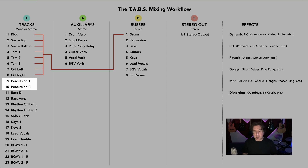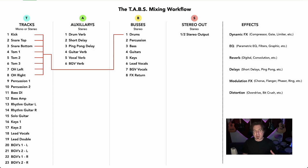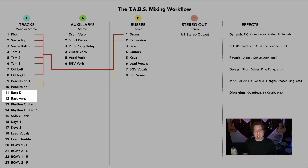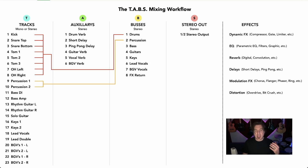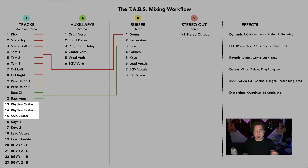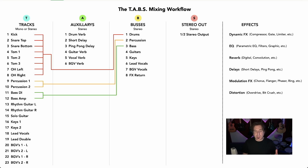Then we look at percussion — perhaps a shaker and a tambourine. I'll get a different blend on them since they're mostly high end, compress and EQ them differently, and assign those to a percussion bus. If I'm recording a bass, I might use a DI and a bass amp and get a good blend between those two, then assign them to a bass bus. Same with rhythm guitar — let's say I have a left and right rhythm guitar and a solo guitar on top; I'll assign those all to a guitar bus.